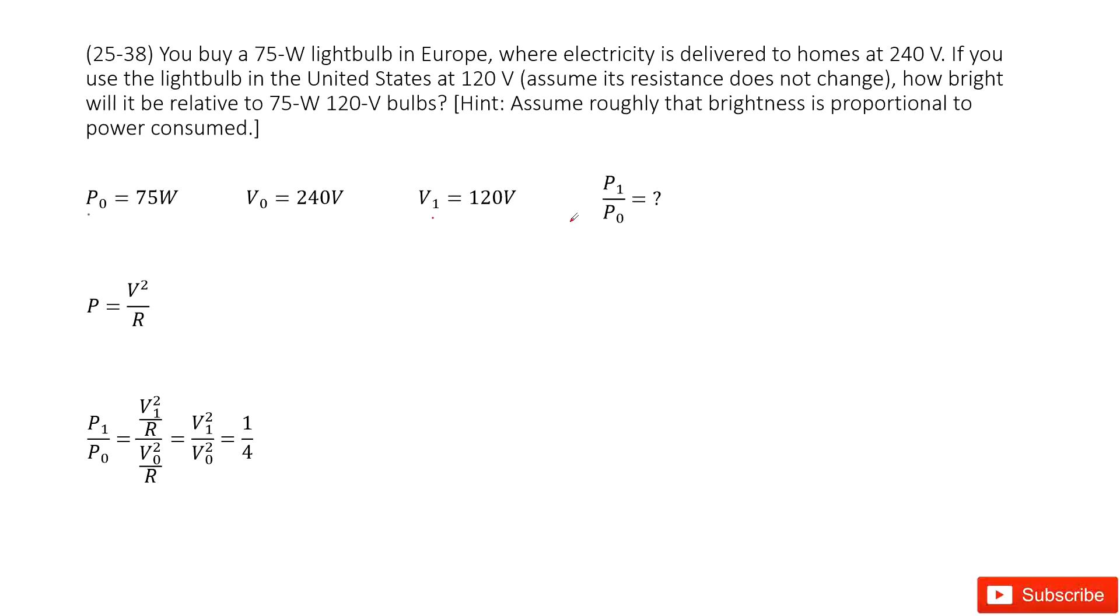We look at this question about the light bulb travel, right? So in Europe, you have a light bulb. The power is P₀, 75 watts. Potential is V₀, 240 volts.